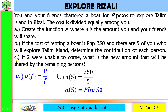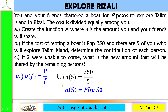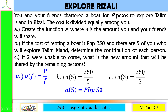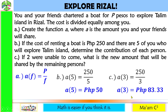Letter C: if two were unable to come, what is the new amount shared by the remaining persons? The friends sharing is no longer five but three because two were unable to come. P250 divided by 3 is equal to P83.33.